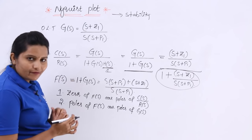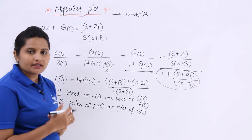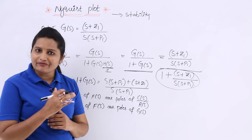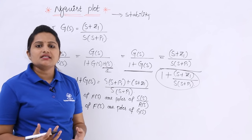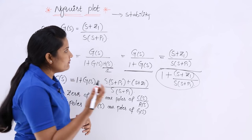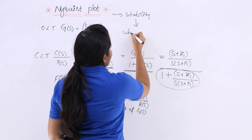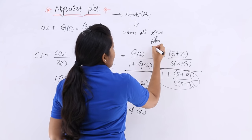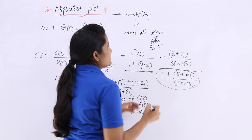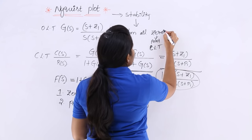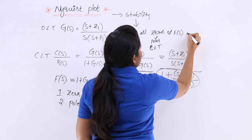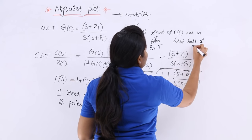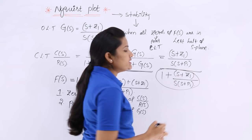After calculating F(s), we apply the stability criterion. If all zeros of F(s) are in the left half of the s-plane, then we can say the system is stable. We use zeros of F(s) because these are the poles of the closed loop transfer function — so when all zeros of F(s) are in the left half of the s-plane, the system is stable.